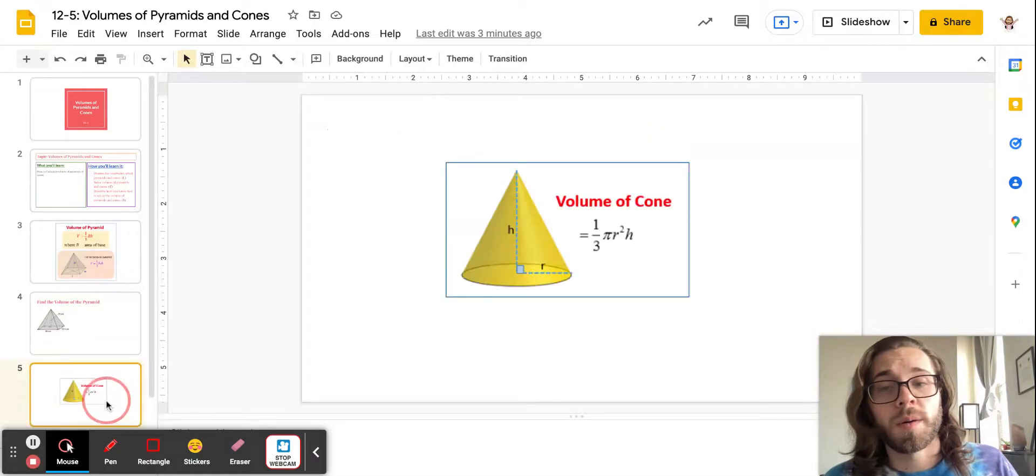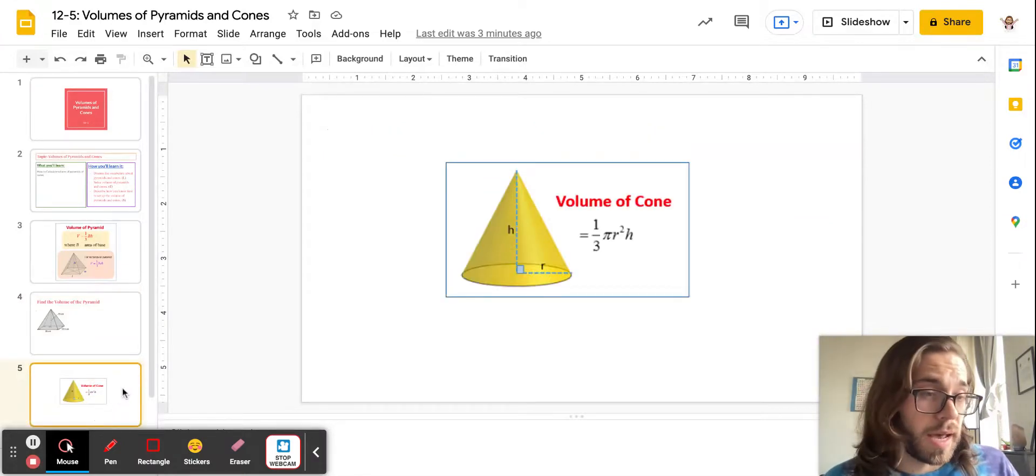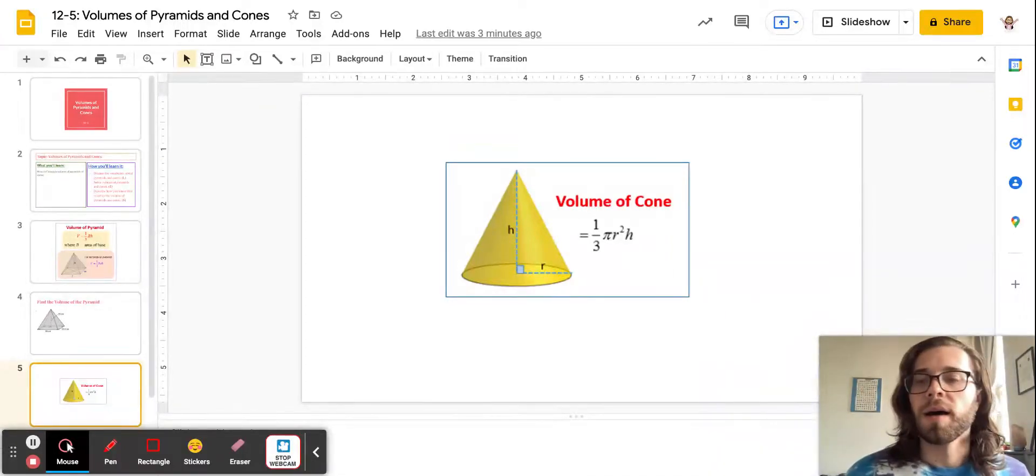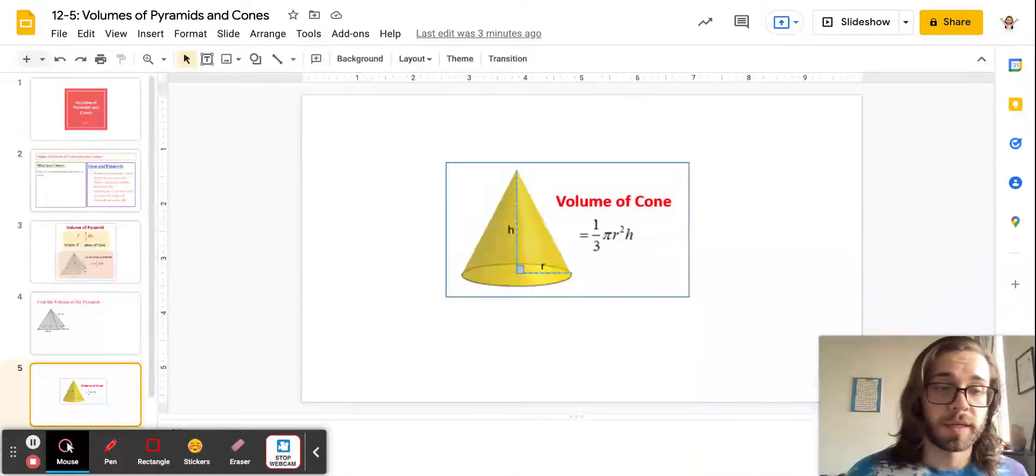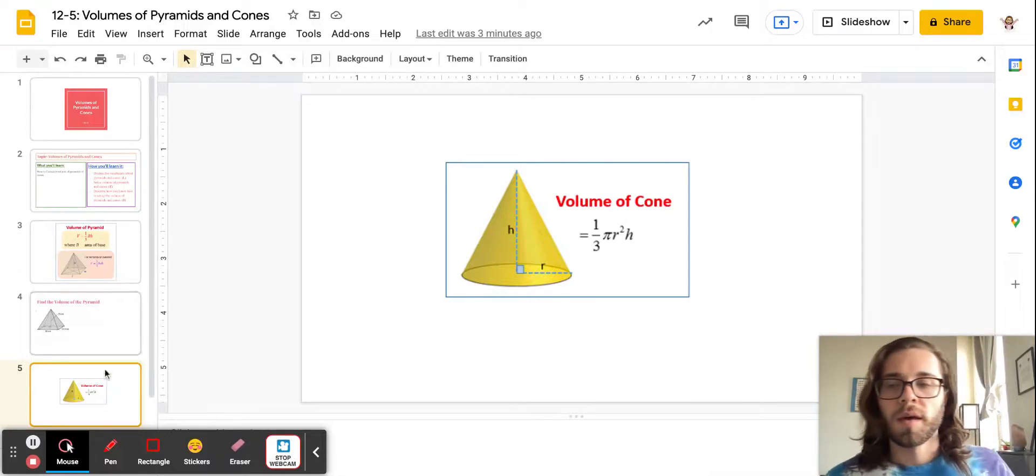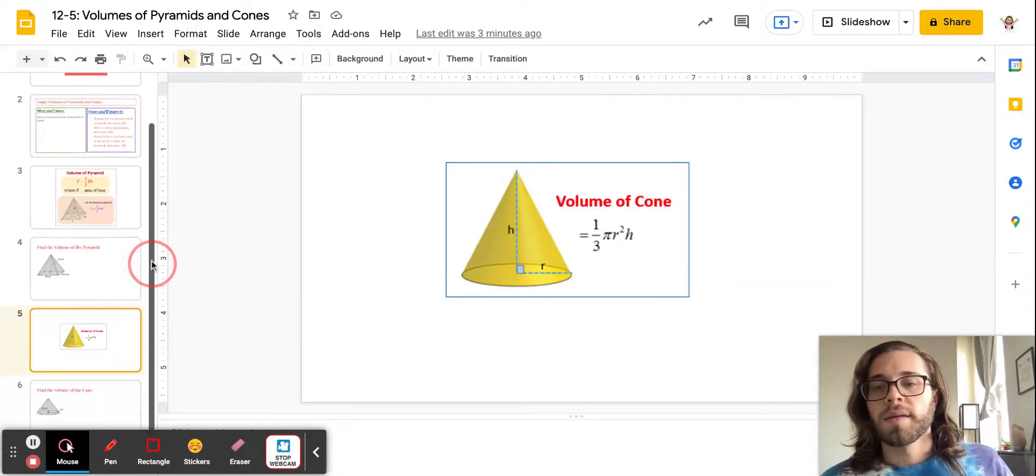All right. Now, a cone, it's again going to be that one-third feature. It's basically like a third of the cylinder, if you want to think of it that way. And again, just like with the pyramid, there are proofs that exist of it. We're not going to do them right now, but they do exist, and it is within the realm of things that if you looked for, you could find pretty easily.